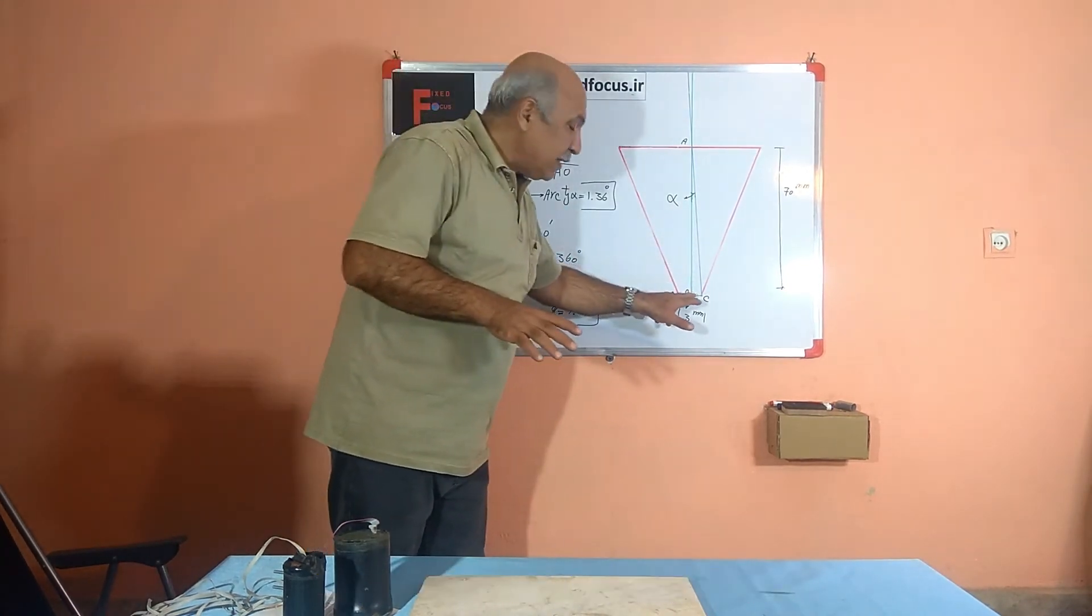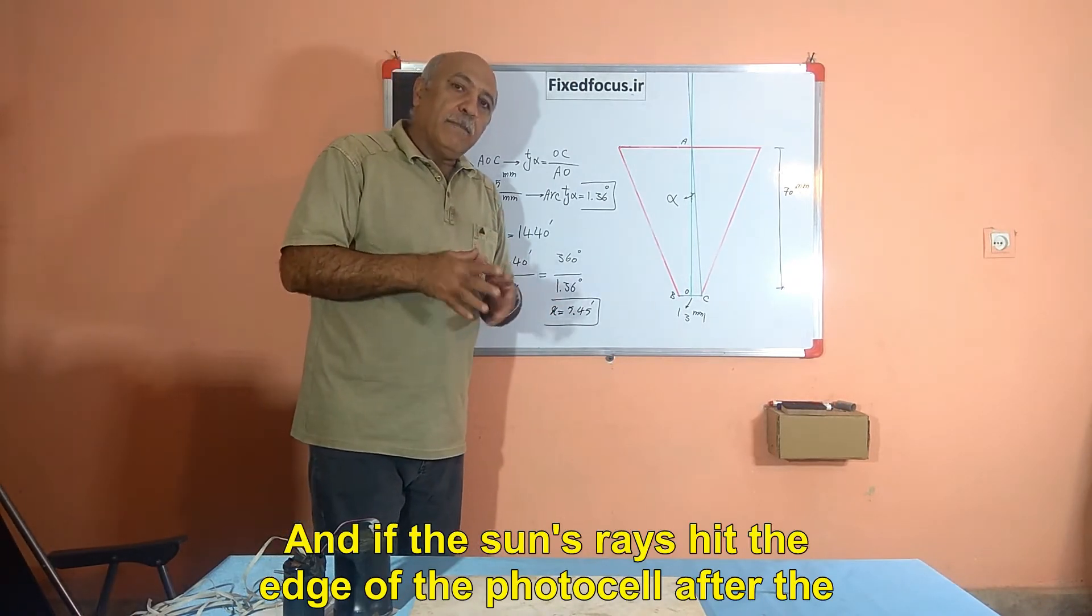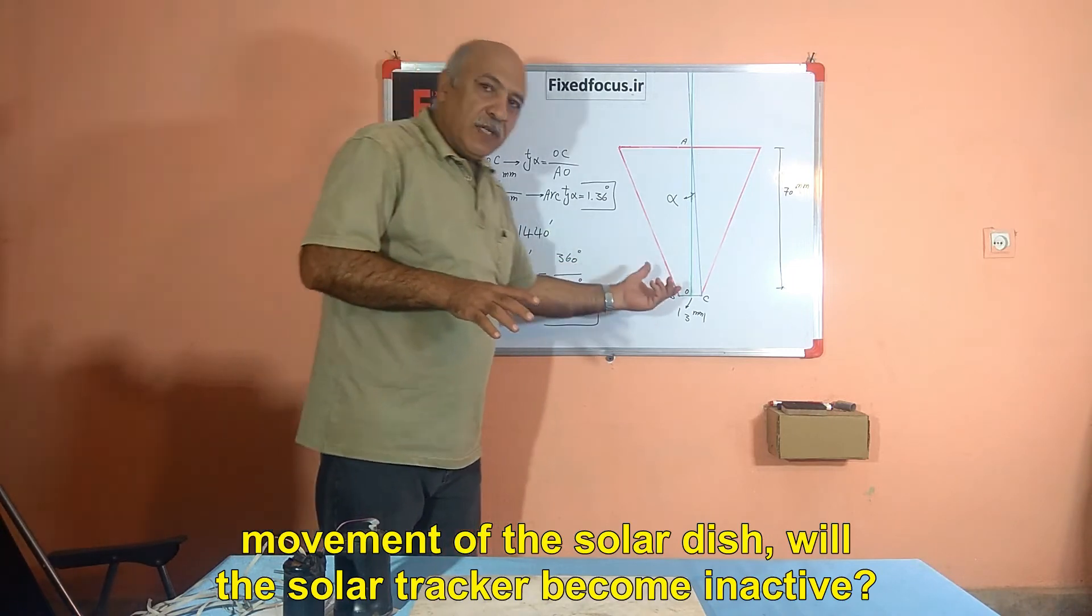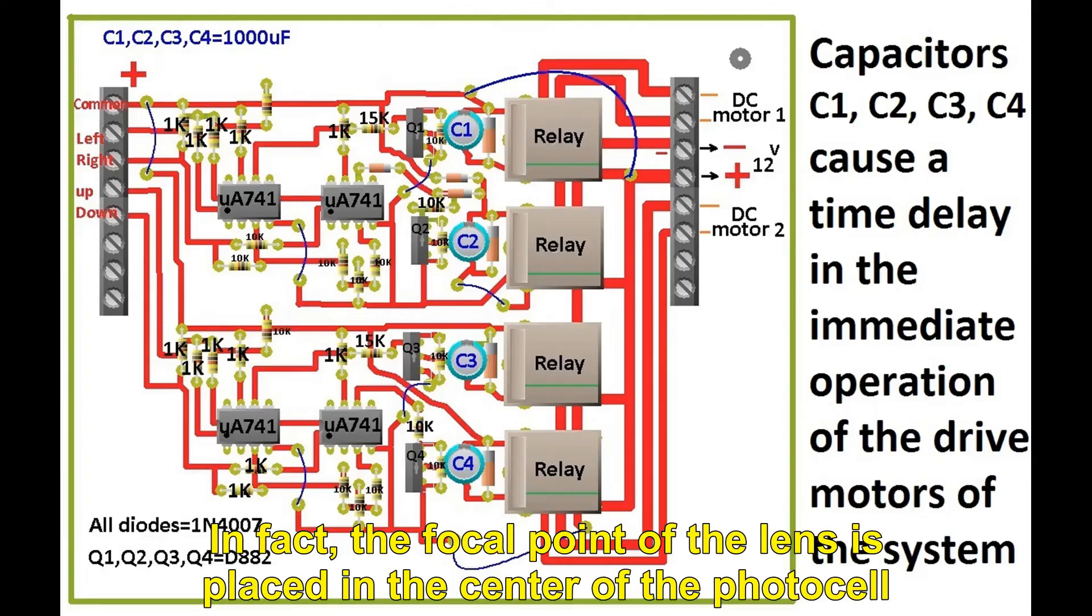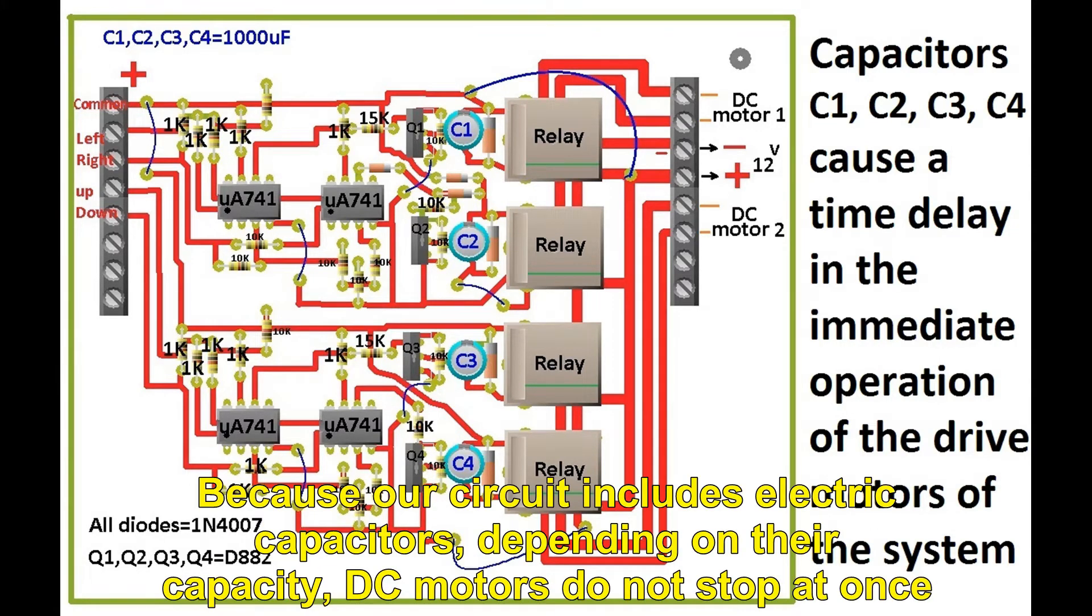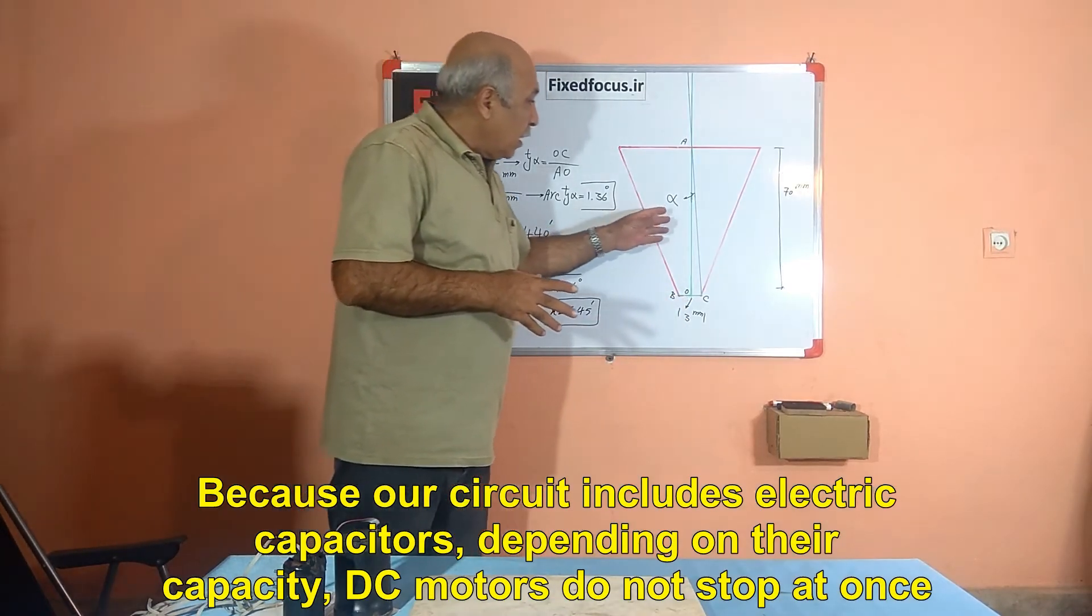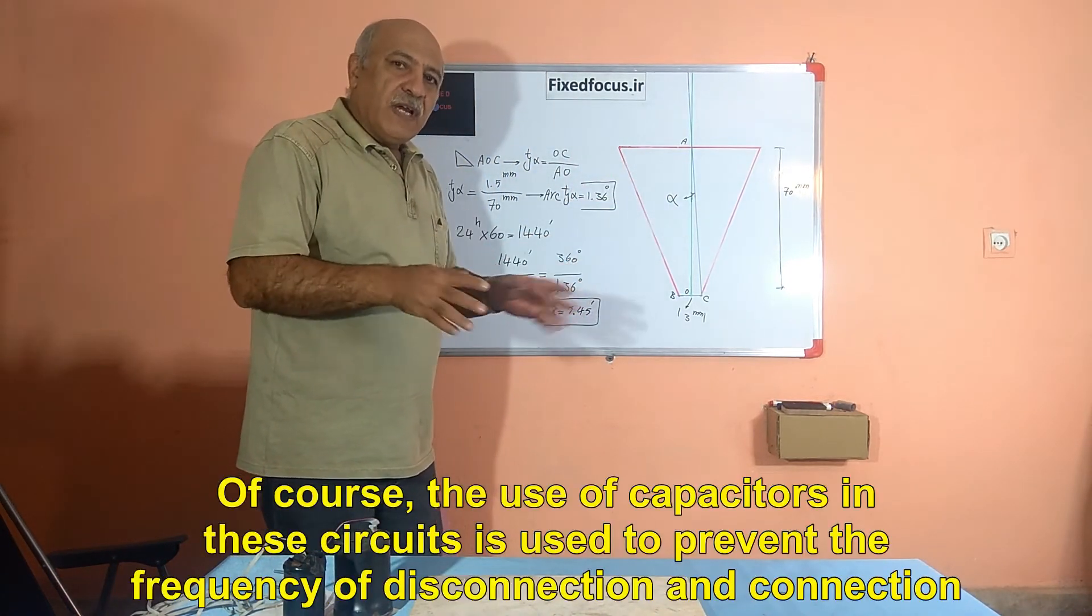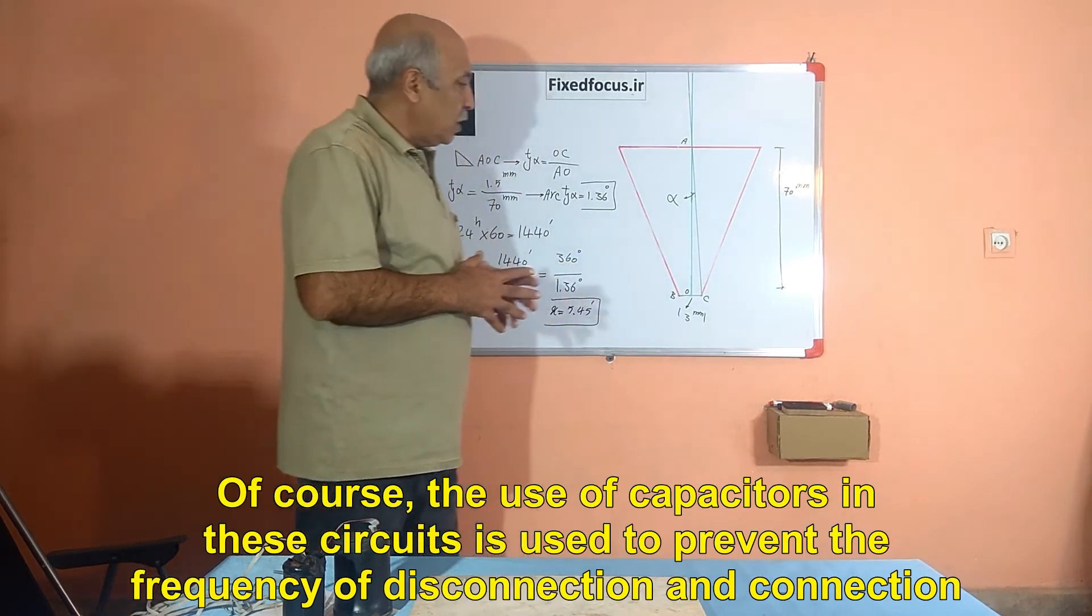A question is raised here. And if the sun's rays hit the edge of the photocell after the movement of the solar dish, will the solar tracker become inactive? In fact, the focal point of the lens is placed in the center of the photocell. Because our circuit includes electric capacitors, depending on their capacity, DC motors do not stop at once. Of course, the use of capacitors in these circuits is used to prevent the frequency of disconnection and connection.